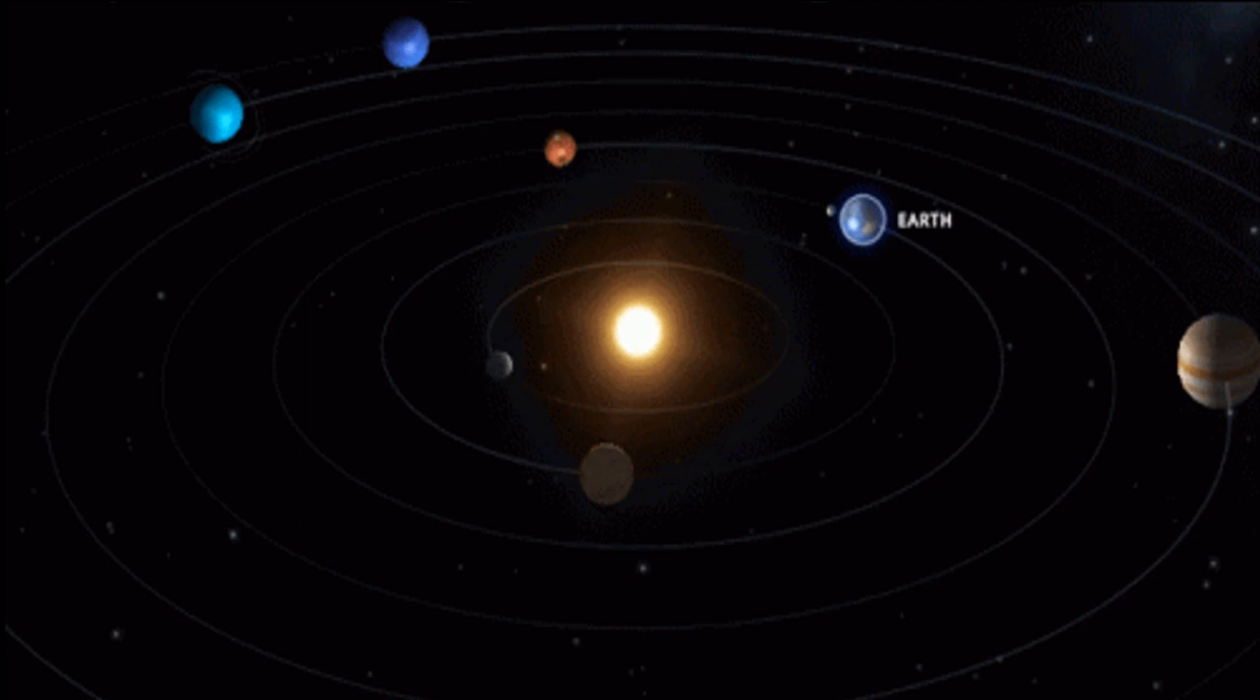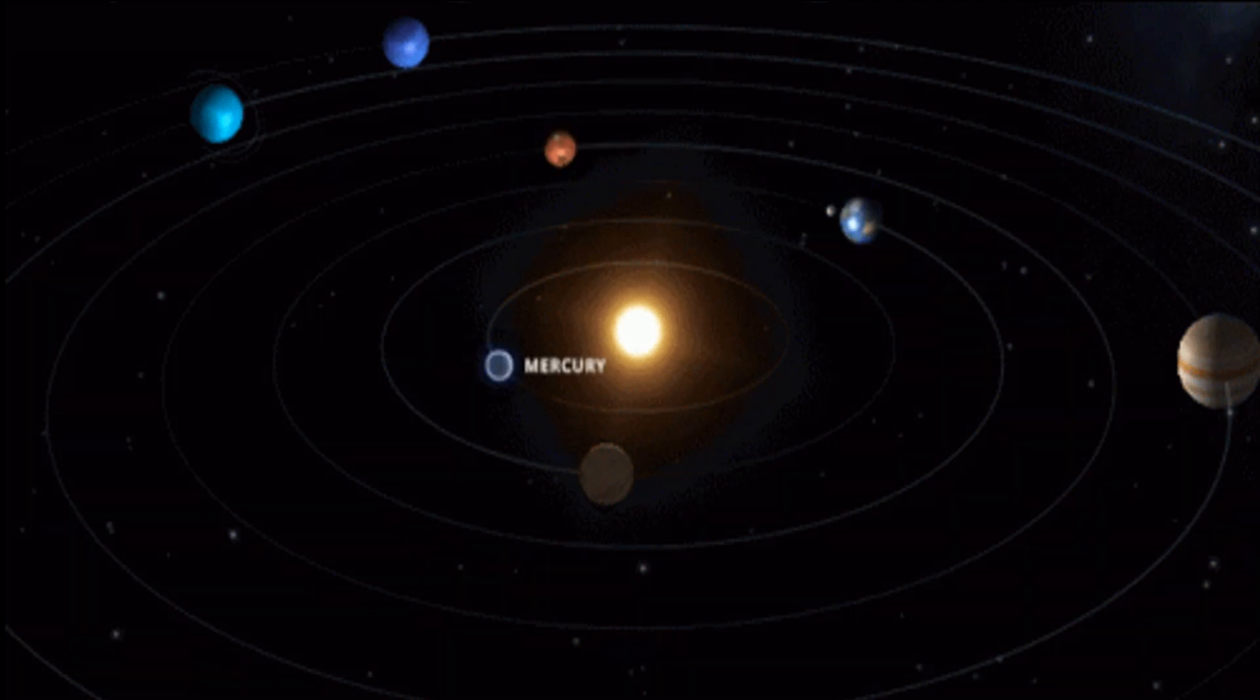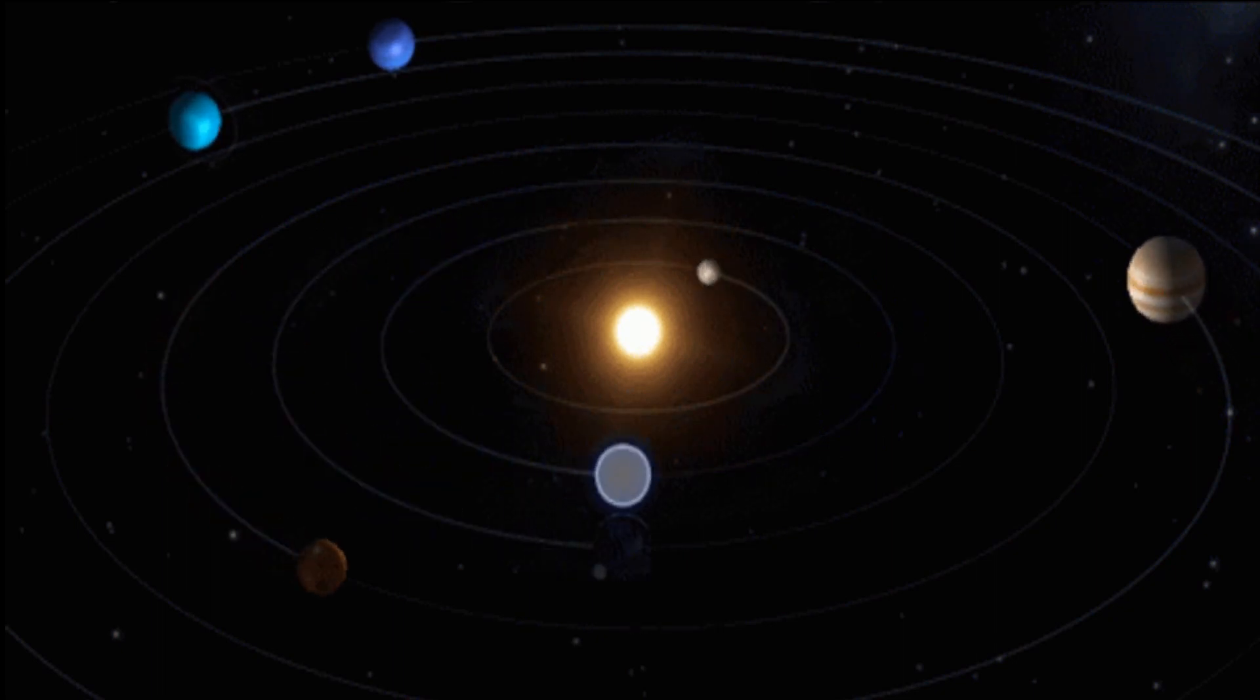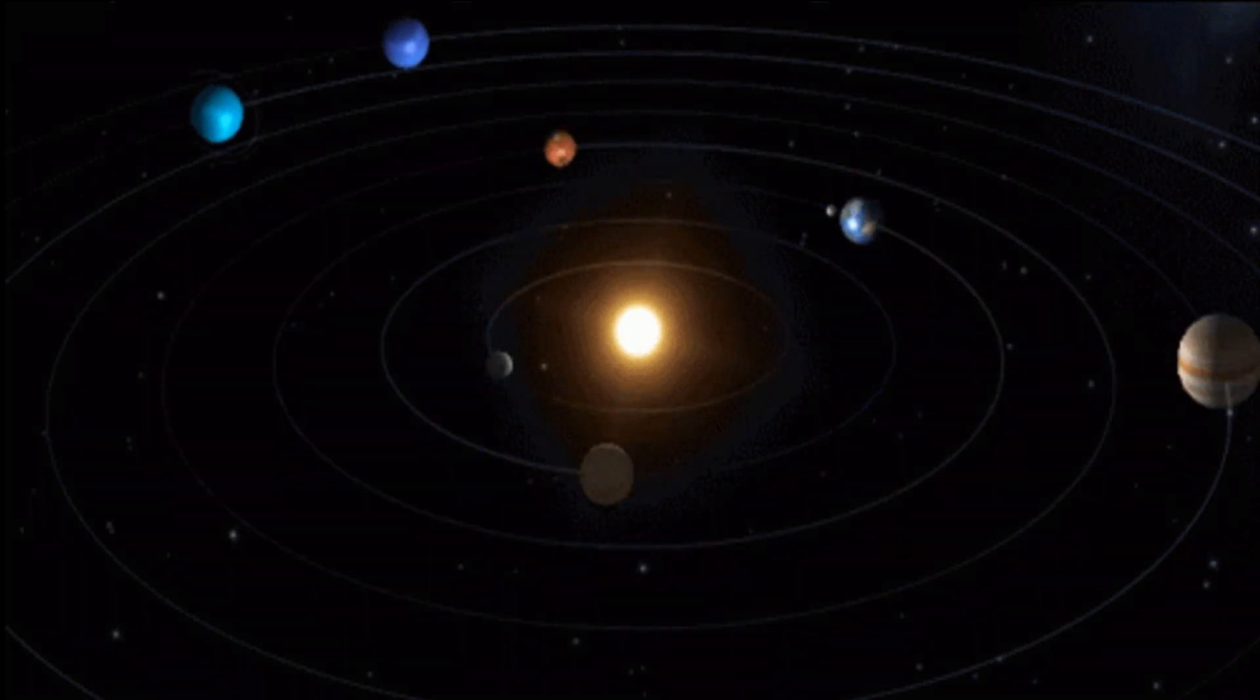However, when astronomers attempted to calculate the rate of precession using Newton's law, there were discrepancies especially for planets orbiting really close to the Sun, such as Mercury.